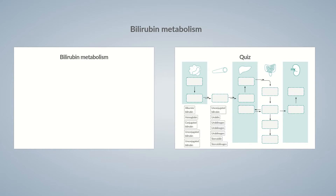Bilirubin Metabolism: How is bilirubin excreted by the body? Bilirubin is produced during the breakdown of hemoglobin, the oxygen-carrying pigment of erythrocytes, commonly termed red blood cells. It has no further benefit for the body and must be excreted, as high bilirubin levels can be toxic. In Part 1, we'll go through the process of bilirubin metabolism.